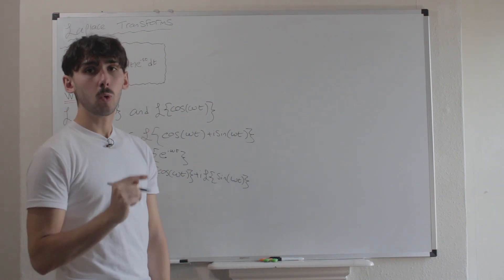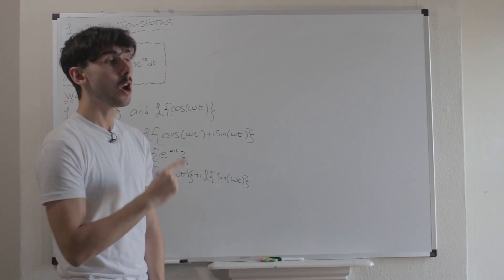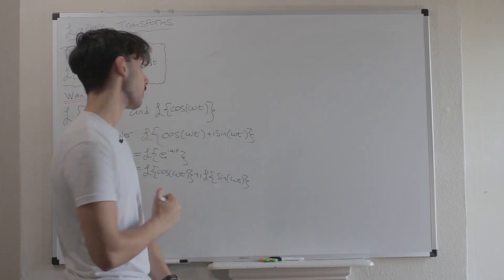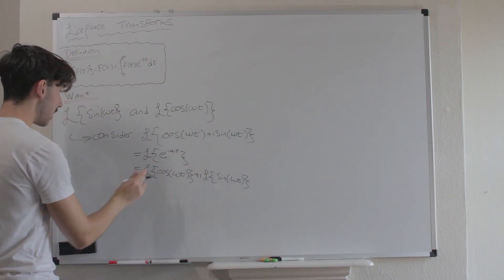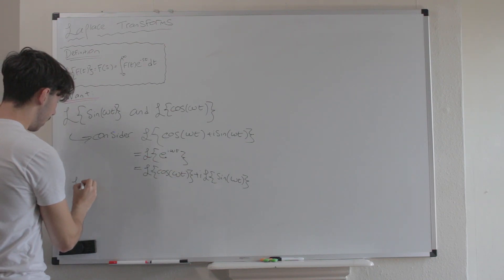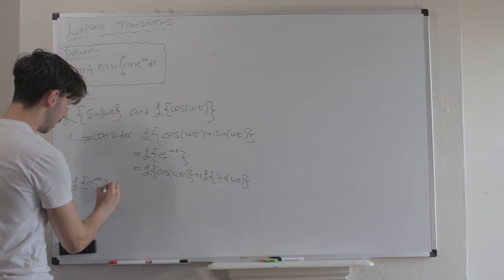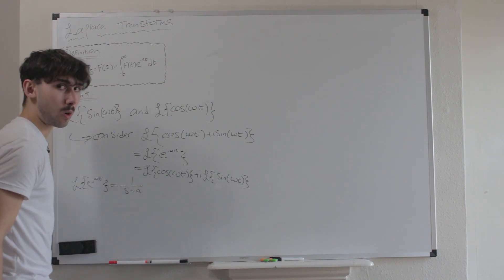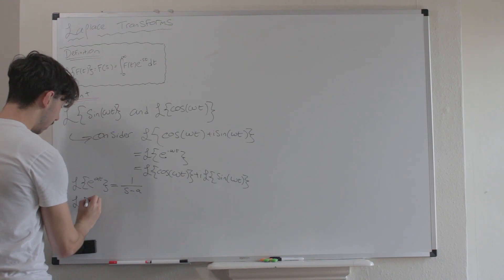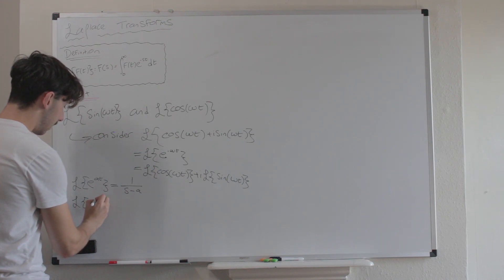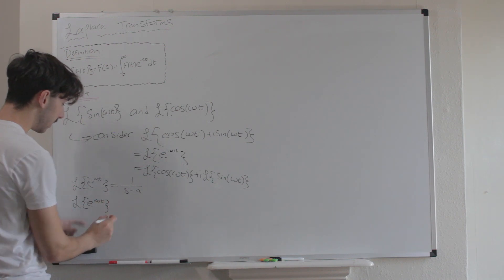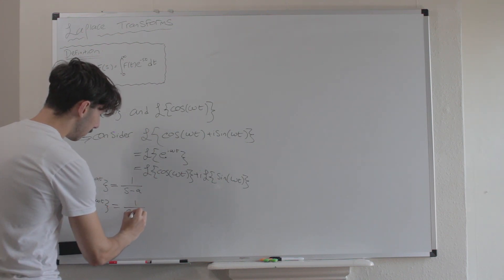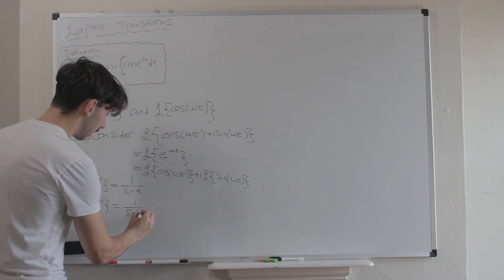Fortunately, from the previous video, we already know how to take the Laplace transform of functions of the form e^(at). The Laplace transform of e^(at) is 1/(s − a). So by the same logic, the Laplace transform of e^(iωt) — where iω fills the role of a — is 1/(s − iω).